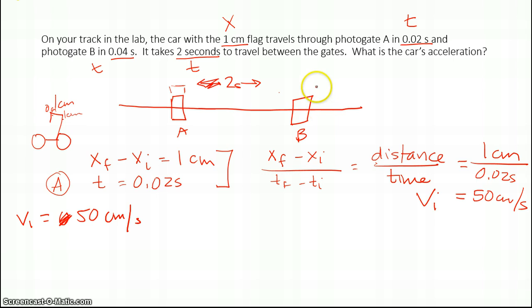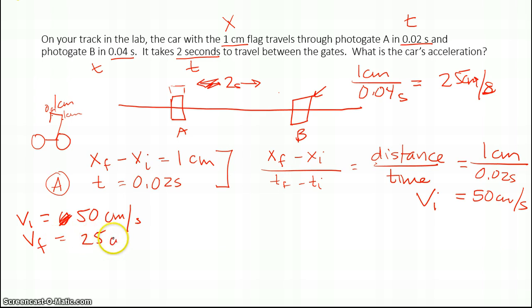How about the next piece of information? Over here at Photogate B, I know that it looks like it's again traveling one centimeter. Same setup as I've done here, but this time it's taking 0.04 seconds. If I do my math here, this works out to be 25 centimeters per second. This here is my Vf value, 25 centimeters per second. Now I have a Vf and a Vi. I'm also told that it's traveling two seconds. So now I have my time, two seconds.